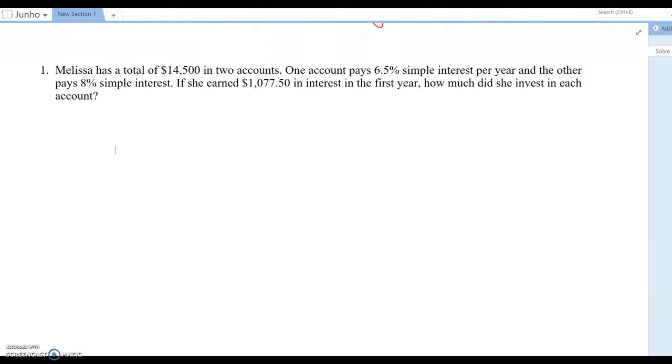Let's look at one more question. Melissa has a total of 14,500 in two accounts. One account pays 6.5% simple interest per year and the other pays 8% simple interest. If she earned $1077.50 in interest in the first year, how much did she invest in each account? So basically the same question as previous one.